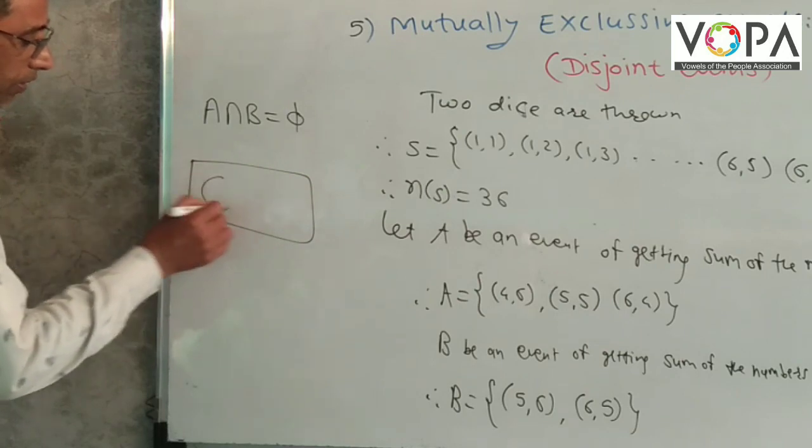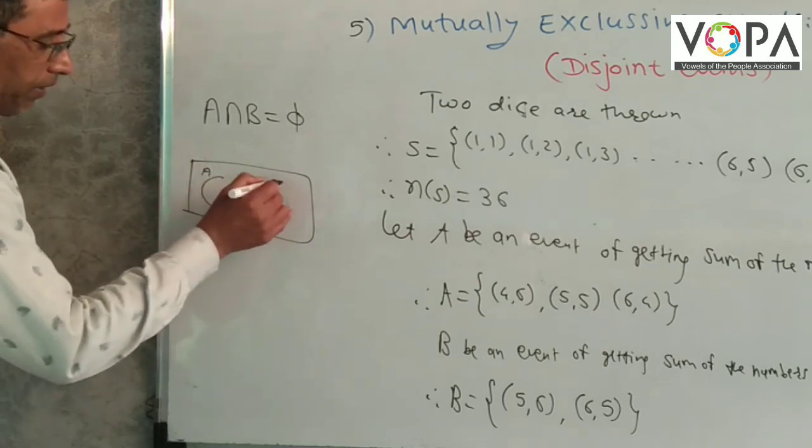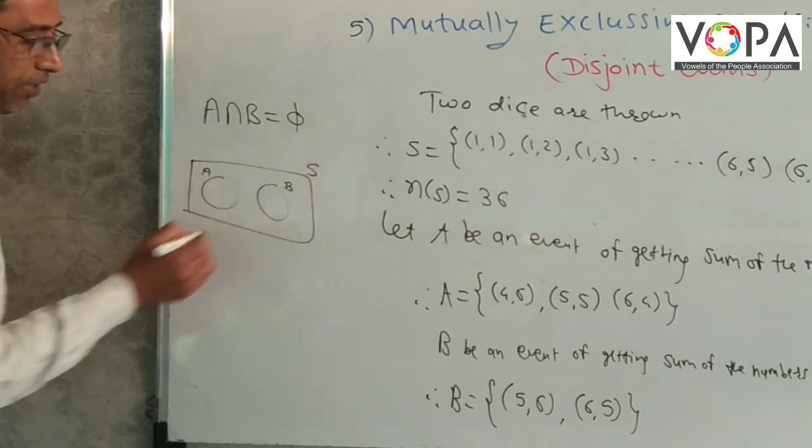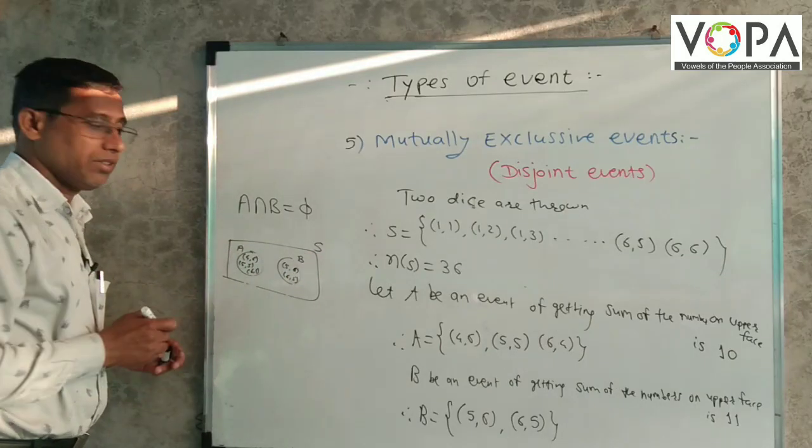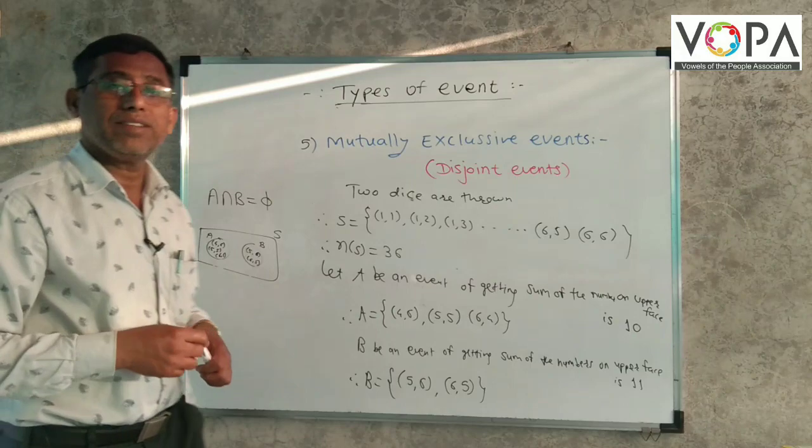Suppose this is A and this is B and this is S, S means sample space and remaining elements are here. So, this is the mutually exclusive events.